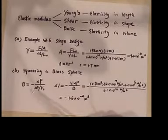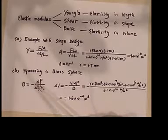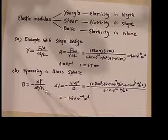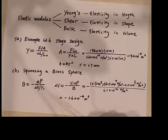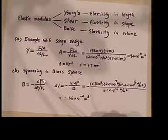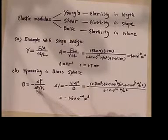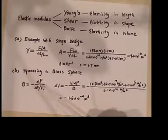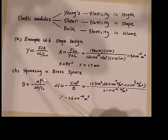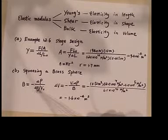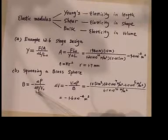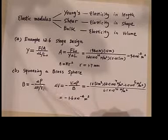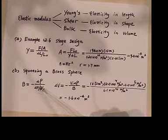Bulk modulus is defined as negative delta P over delta V over V initial. Delta P is the change of pressure. Delta V is change of volume. And V0 is the initial volume. Now, imagine if delta P is positive, which means pressure increase, then delta V change of volume will be negative. So this combination is negative.